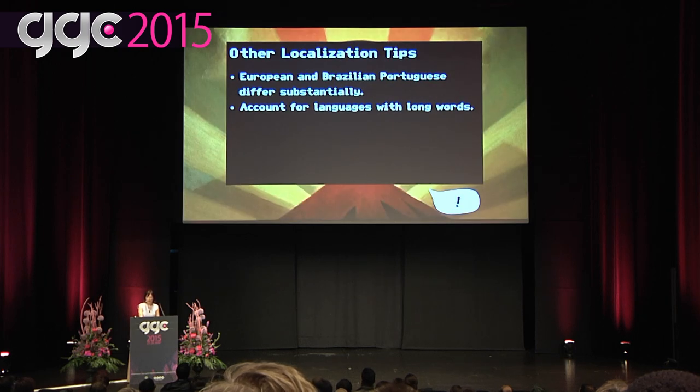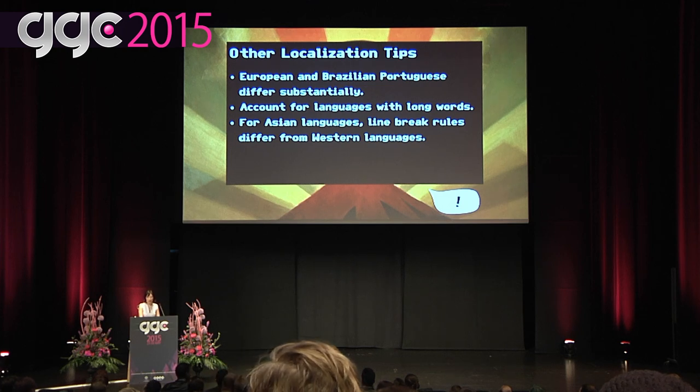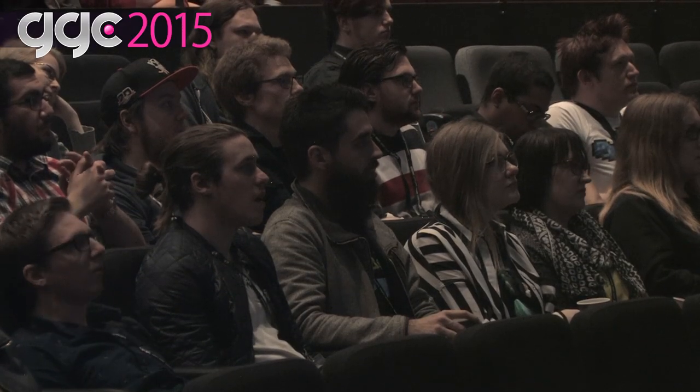Make sure to account for languages with very long words — the typical culprits are German and Slavic languages, and the bugs are almost always in menus. I recommend writing a debug feature that uses the longest possible string in any languages you support to find these bugs without testing each language separately. For Chinese, Japanese, Korean, and Thai, which often don't use spaces to indicate word breaks, make sure you consult the rules for line breaks. For languages that use Chinese characters, you may need to worry about the glyph texture atlas size — only include the glyphs actually used in your game.